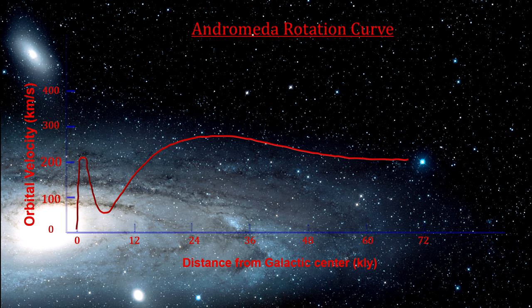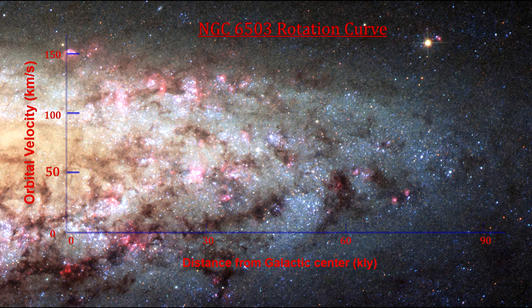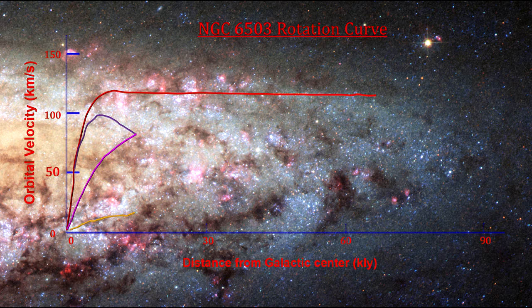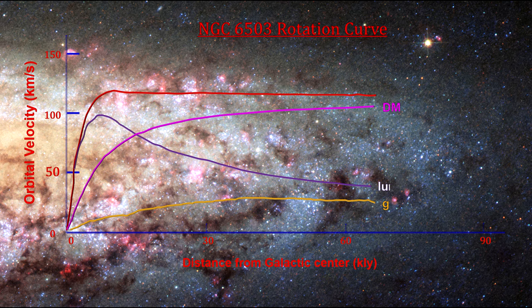Here's Vera Rubin's measurements of the velocity curve for Andromeda. And here's the rotation curve for NGC 6503, the galaxy on the edge of the local void that we covered earlier. Using accurate and high-resolution emission lines from neutral hydrogen, astronomers modeled the mass distribution of this galaxy. They used the mass-to-light ratio in the visible disk, the galaxy's core radius, and the circular velocity of the halo. The study found the contribution to the rotation curve of three types of matter: gas, luminous matter, and dark matter.